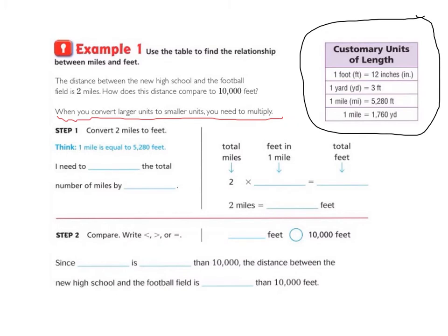It says when you convert larger units to smaller units, you need to multiply. So step 1, convert 2 miles to feet. Think 1 mile is equal to 5,280 feet. So if we're converting 2 miles, a larger unit, to feet, a smaller unit, we need to multiply.